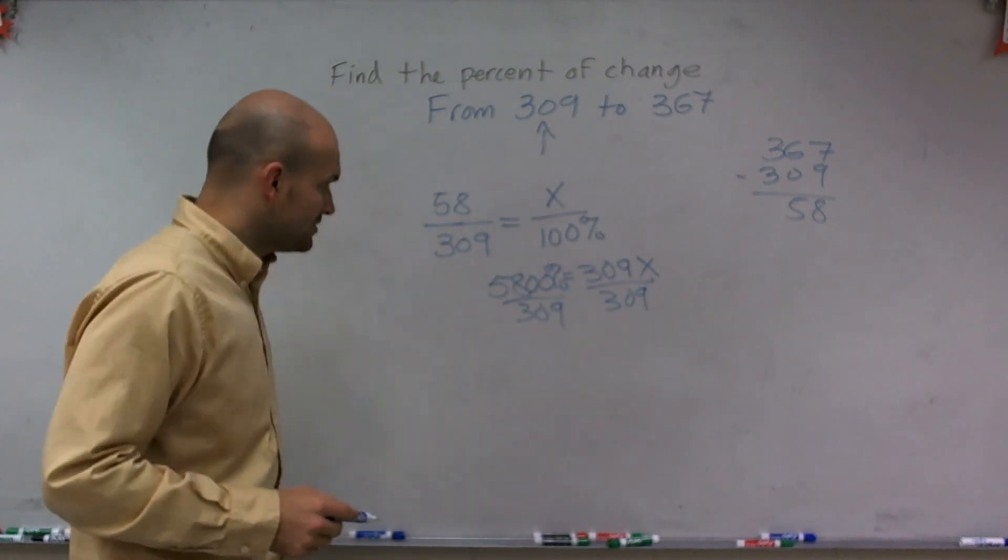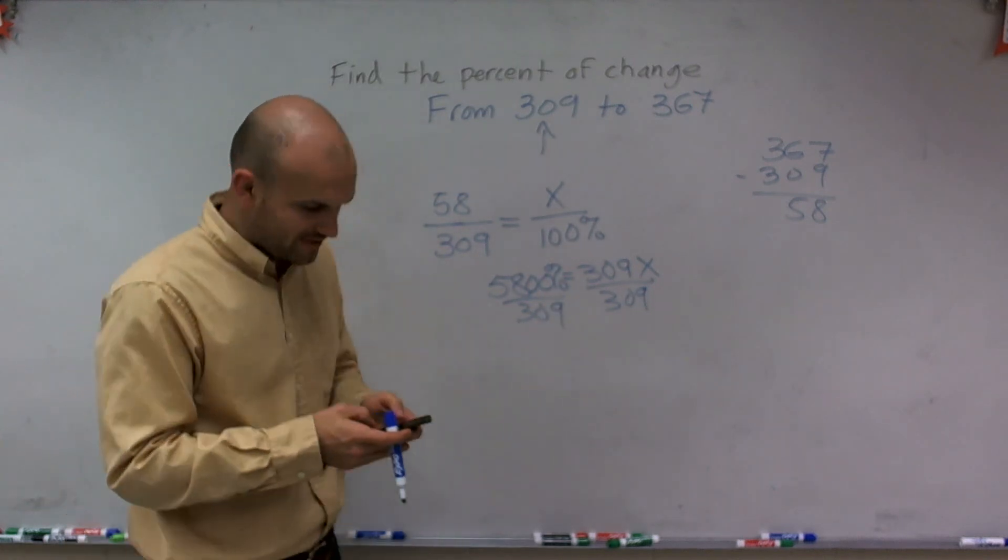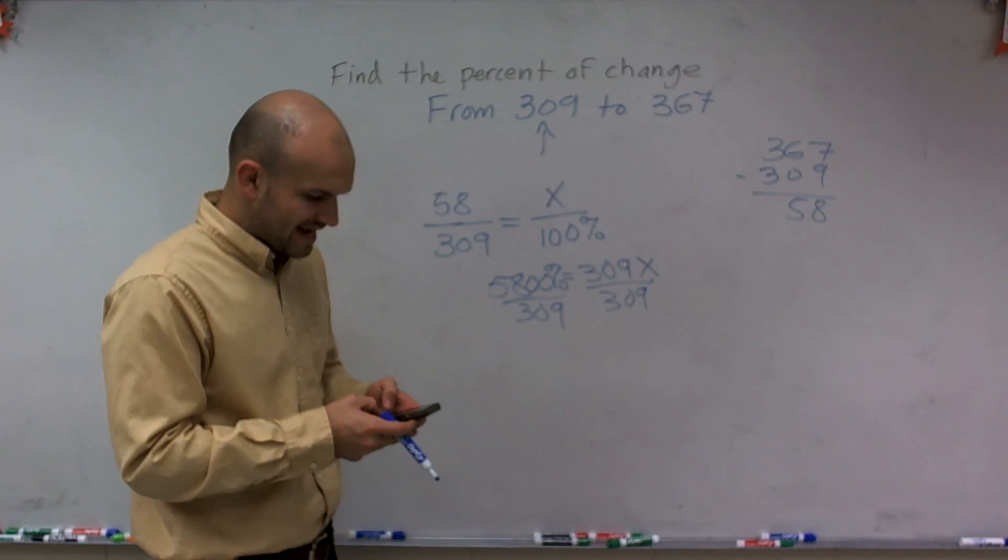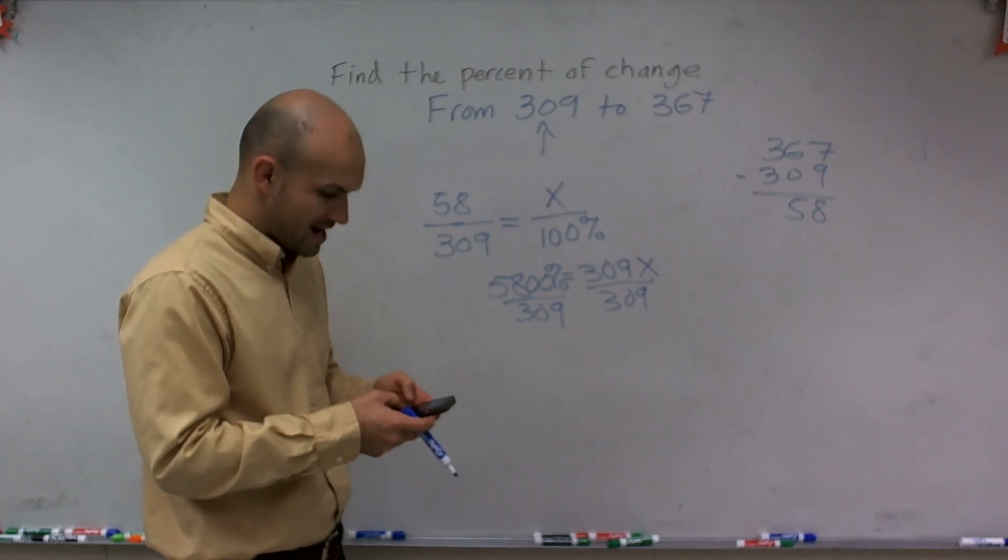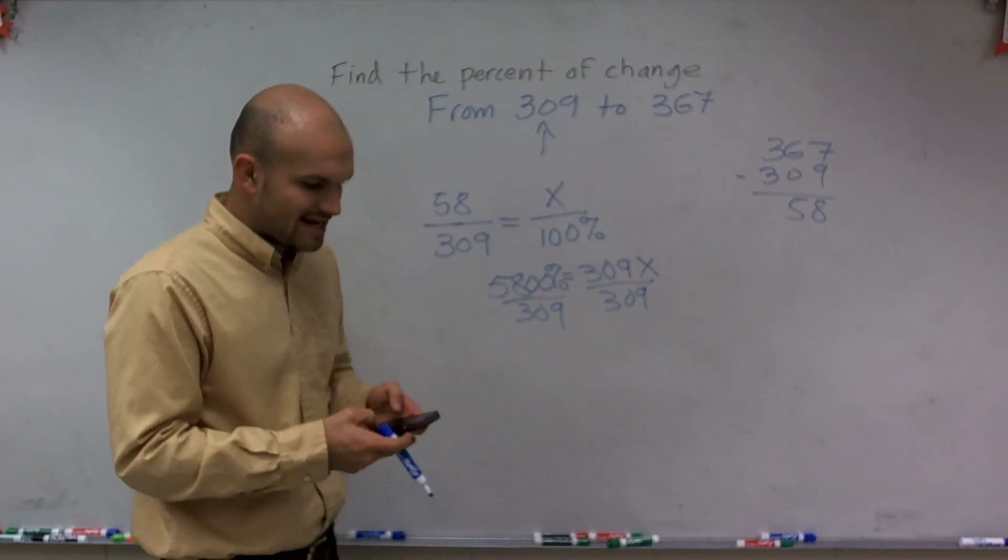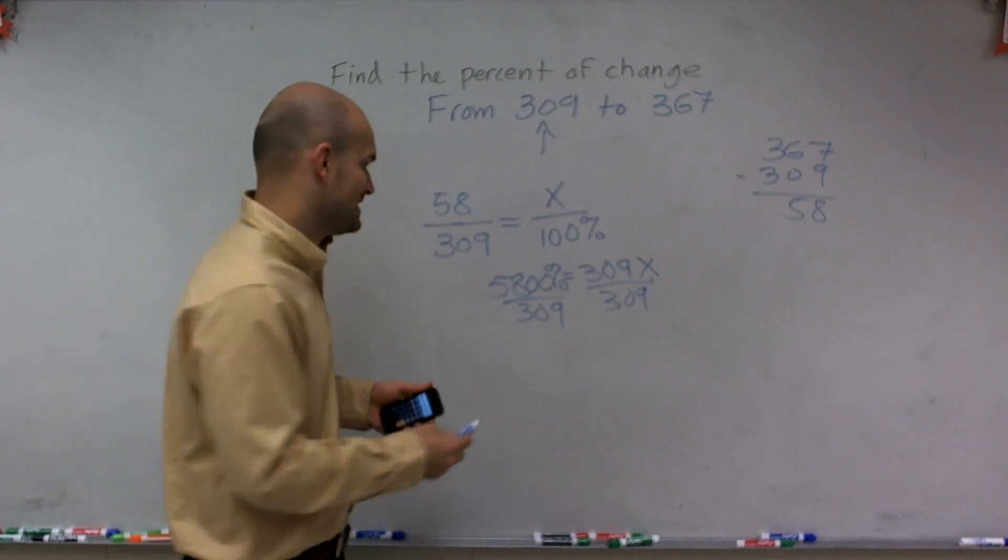And therefore, use my nice little handy calculator I have here, I'll do 5,800 divided by 309, and that's going to equal 18.8%.